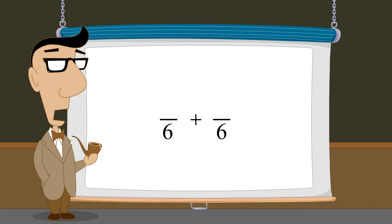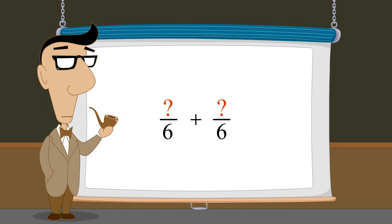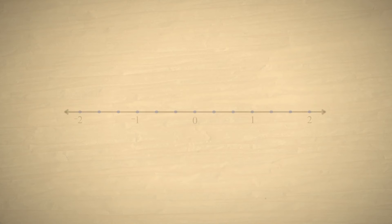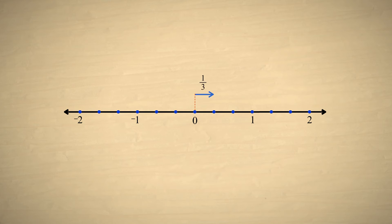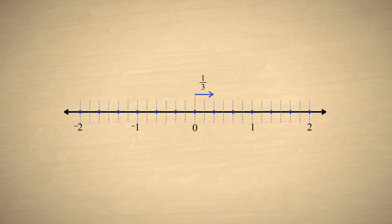But when we change a fraction's denominator, we must also change its numerator so that the fraction still represents the same quantity as it did before. Let's see how this works on the number line. In the previous example, we started with the fraction one-third, then split each division on the number line into two pieces. There were then twice as many divisions per unit length, so we had to multiply the denominator by two. The fraction one-third then represented twice as many of these new smaller divisions, so we also had to multiply the numerator by two. So the new equivalent fraction was created by multiplying both the numerator and the denominator by two.